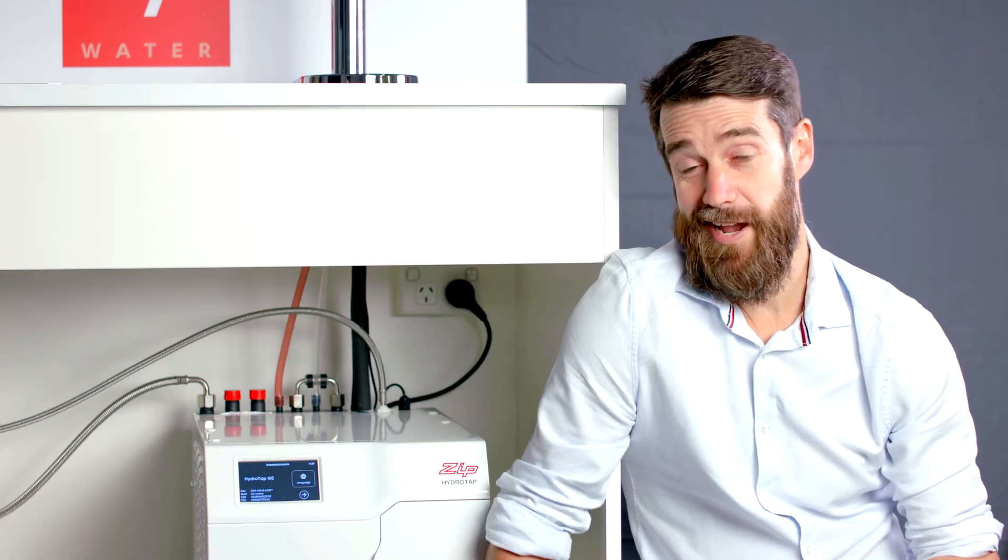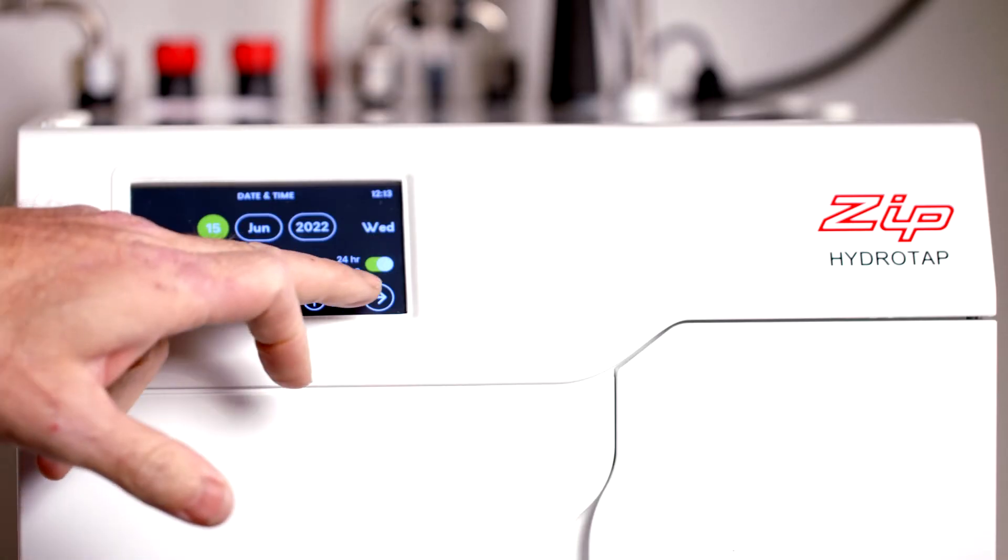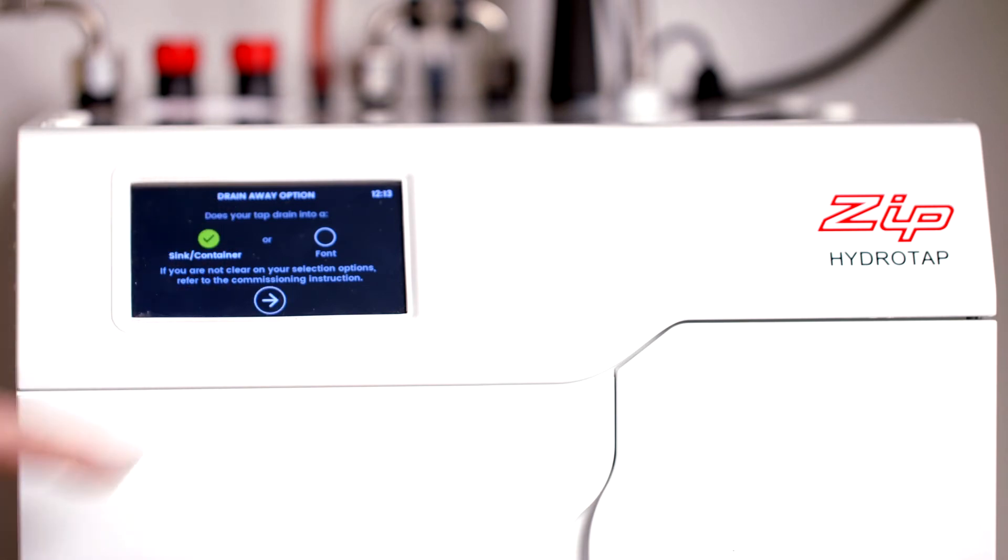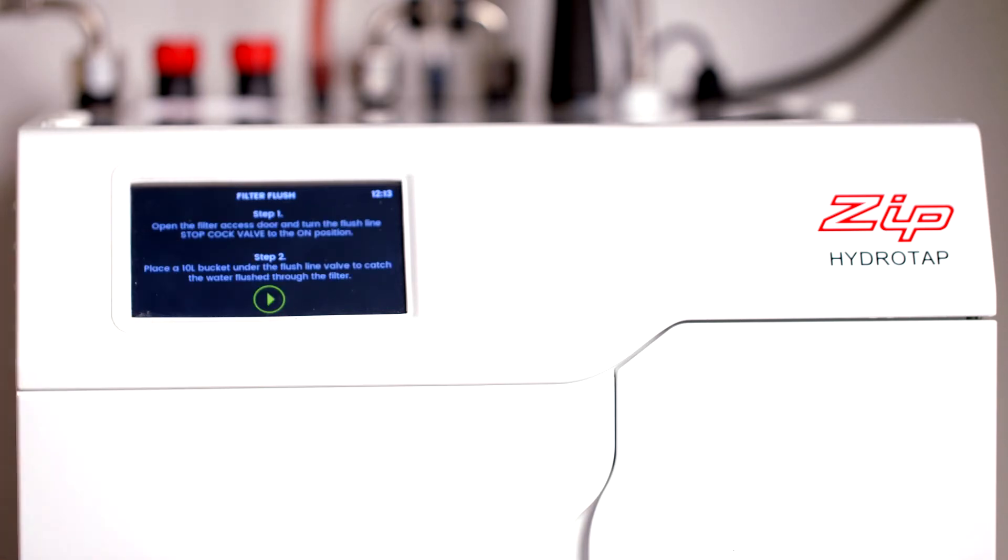The next screen asks you to select the drain away option. This simply means if your tap or faucet is installed to dispense into a sink or the specially designed Zip font. If you select sink container, the flushing process from the tap will be automatic. If you select font, you'll need to use the tap or faucet to dispense water during the commissioning process.